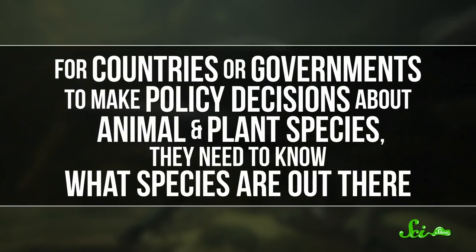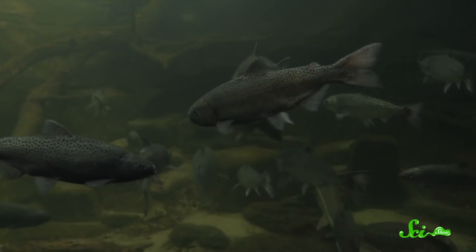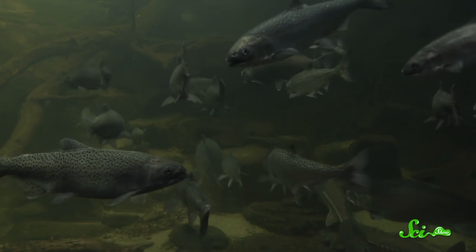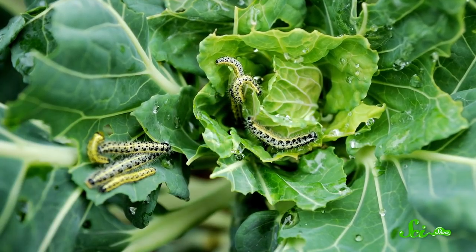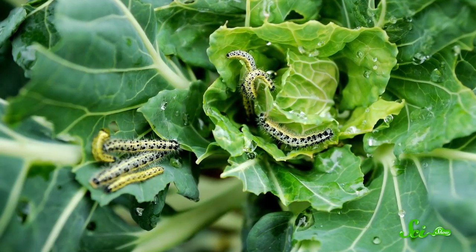Now, don't get me wrong — taxonomy is really useful. Life is a continuum, and classification is a tool we use to understand it. Without it, we'd struggle to describe the organisms around us or understand evolutionary relationships. But we've also seen some of the quirks of our current system, and those quirks can have consequences. For one, we need the insights taxonomy gives us to be able to protect the natural world. For countries or governments to make policy decisions about animal and plant species, they need to know what species are out there. Like, if a national park is trying to understand the diversity of animals within its borders, it's important to know whether two populations of fish are related. Or if crops are being attacked by a new invasive species of insect, knowing exactly what species it is can help farmers, scientists, and policymakers protect the food supply.